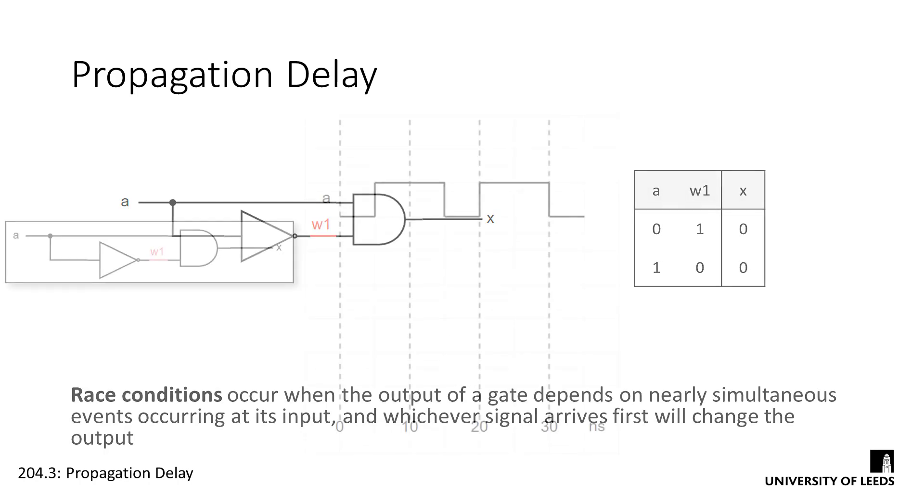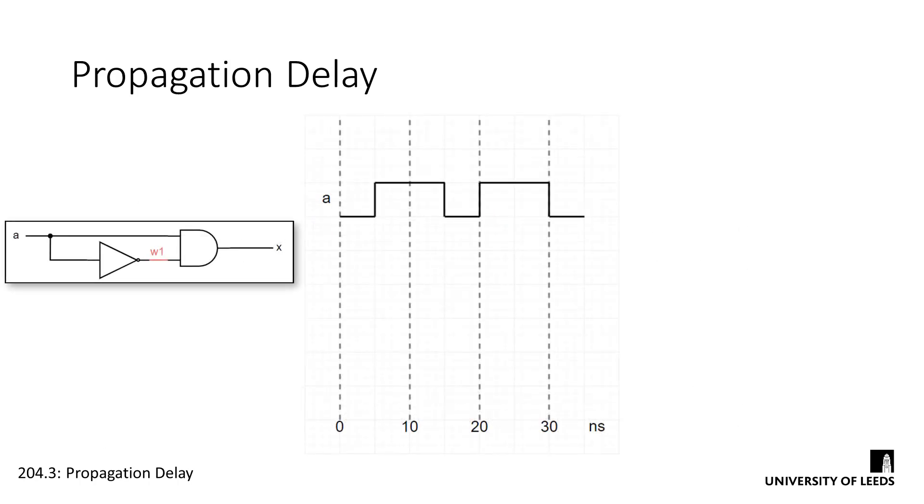We can draw the timing diagram of this circuit, taking propagation delay through the components into account to determine the result of this race condition. Let's assume that each gate has a 1 nanosecond propagation delay and the propagation delay through the wires is negligible.